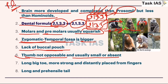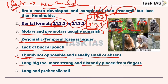Platyrrhini means new world monkeys. They have a long big toe, more stronger and distantly placed from fingers, but that is not opposable. They have a long prehensile tail that also helps in their locomotion.